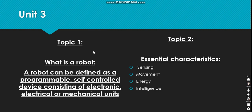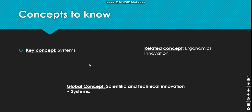The essential characteristics include sensing, movement, energy, and intelligence — everything that a robot needs. Sensing refers to the sensors that a robot has. Movement covers its speed and distance. The three key concepts are systems, related concepts which include ergonomics and innovation, and global concepts which include scientific and technical innovation and systems.